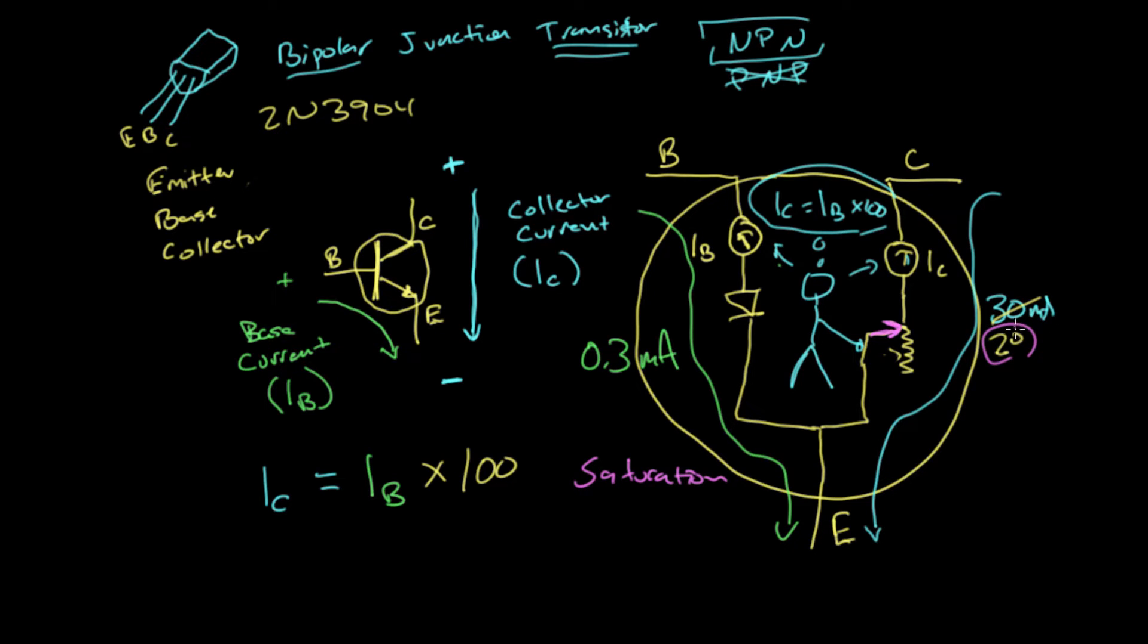As much current as possible will flow through there because the current that is flowing through—in this case maybe it's only 20—is less than what this guy is trying to make. He's trying to get 100 times 0.3, so he's trying to get 30 milliamps to flow.